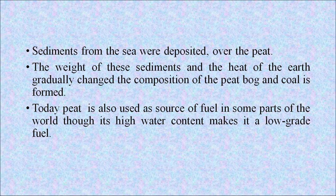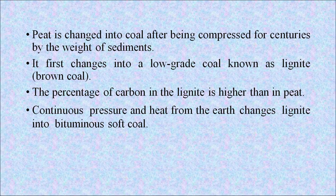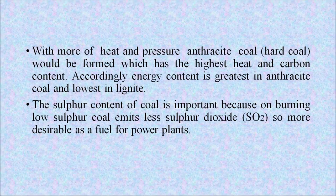Peat is also used as a source of fuel in some parts of the world, though its high water content makes it a low-grade fuel. Peat is compressed for centuries by the weight of sediments, first changing into a low-grade coal known as lignite or brown coal, which has a higher percentage of carbon than peat. Continuous pressure and heat changes lignite into bituminous soft coal, and with more heat and pressure, anthracite or hard coal is formed, which has the highest heat and carbon content. Accordingly, energy content is greatest in anthracite and lowest in lignite.